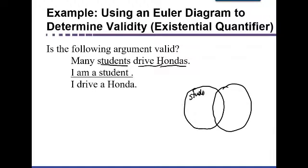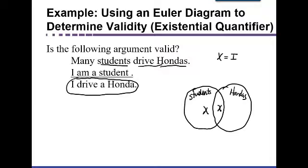Here's my circle for students and one for people who drive Hondas, overlapping. If I say 'I am a student,' I put an X to represent me. There are two regions inside the student circle: the overlapping part with Honda drivers, and the part that isn't. Since I don't know which region I'm in based solely on the premises, I can't say for sure that I drive a Honda. So this is an invalid argument. That's the end of Euler diagrams.